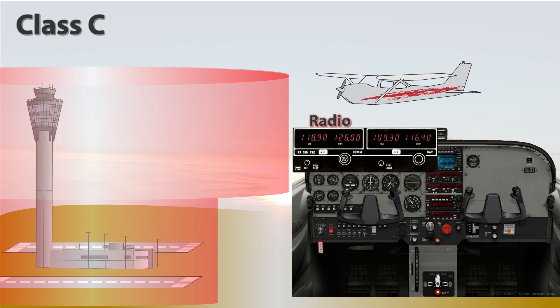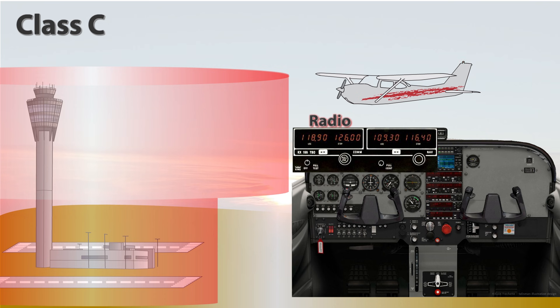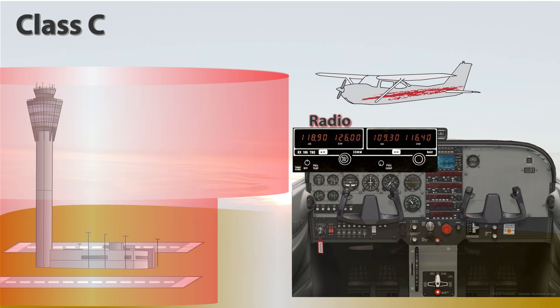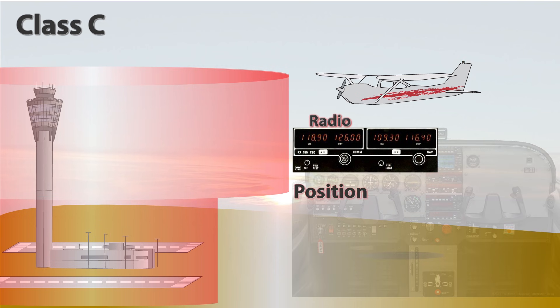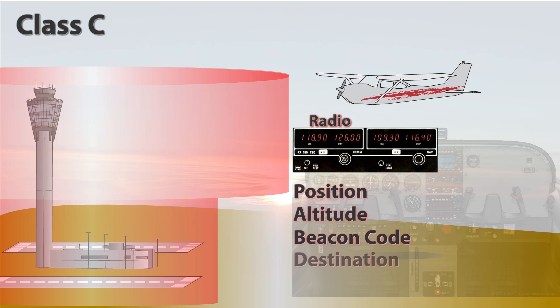Since a two-way radio is the other required equipment, it is no surprise that we must also use it. To enter or operate within Class C, two-way radio communication must be established and maintained with ATC. When approaching a Class C, the pilot should contact the appropriate ATC or approach control on the published frequency with their position, altitude, radar beacon code — or transponder code if previously given one from another ATC facility — their destination, and request Class Charlie service. We should also initiate this contact far enough out to ensure we can establish communication with the controller before entering the airspace.